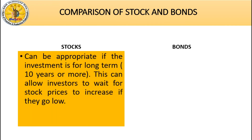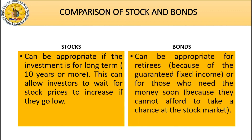Stocks can be appropriate if the investment is for the long term, such as 10 years or more, as this allows investors to wait for stock prices to increase if they go low. Bonds can be appropriate for retirees because of the guaranteed fixed income, or for those who need the money soon because they cannot afford to take a chance at the stock market.